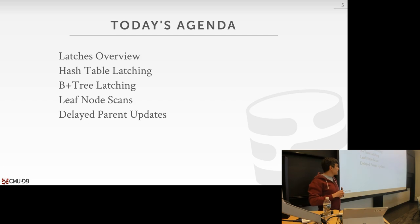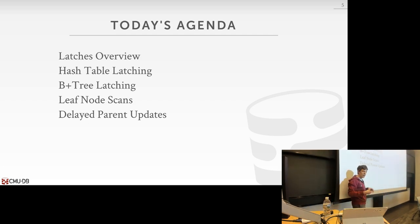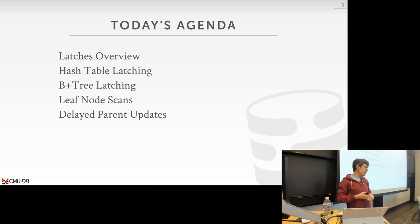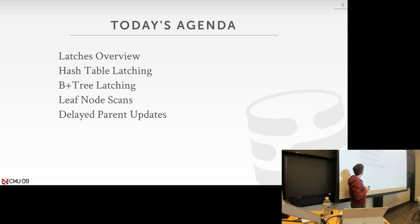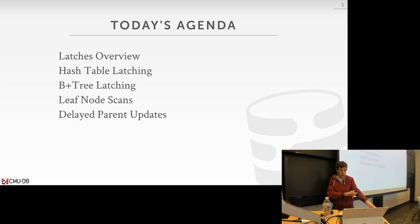We'll begin by talking about what a latch actually is and how it's implemented, then start with the easy case of thread-safe hash tables — which are simple to handle — and then spend most of our time on B+ trees, covering leaf node scans and other optimizations when multiple threads are accessing things at the same time.